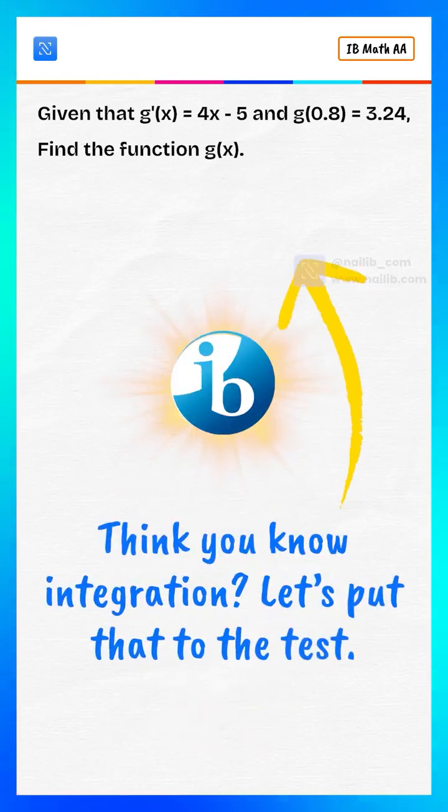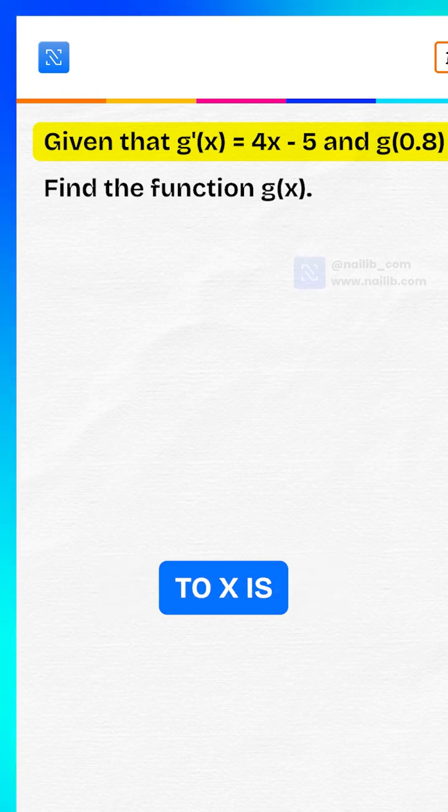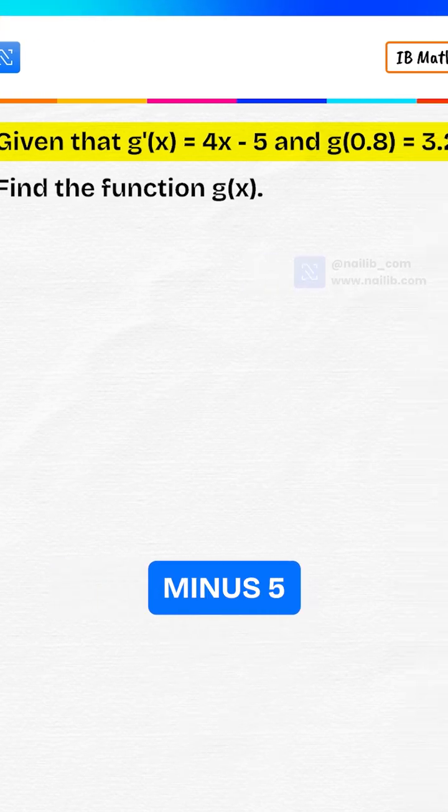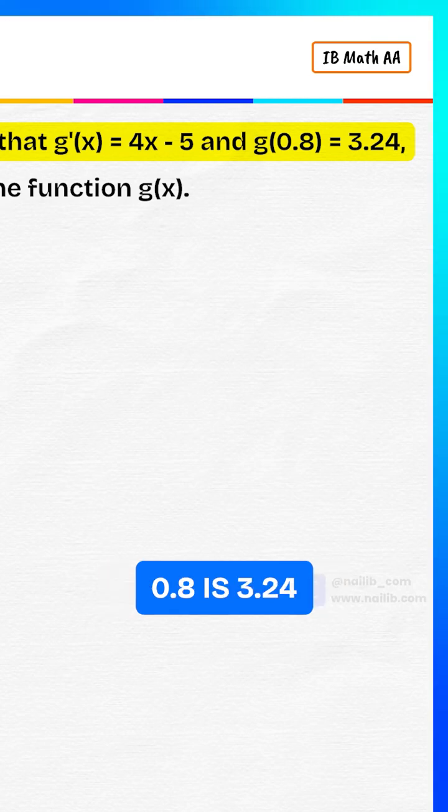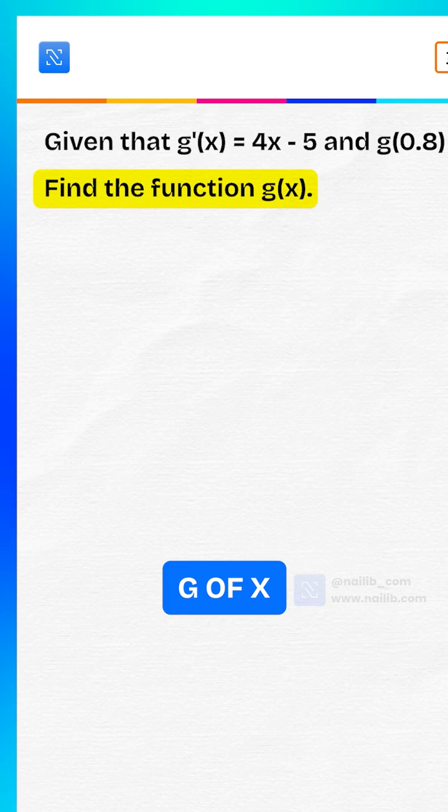Think you know integration? Let's put that to the test. Given that the derivative of g with respect to x is 4x minus 5 and the value of g at 0.8 is 3.24, find the function g of x.